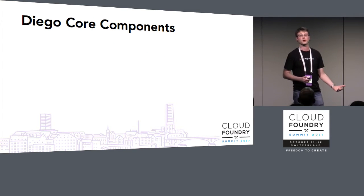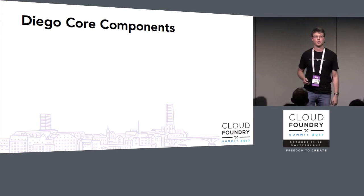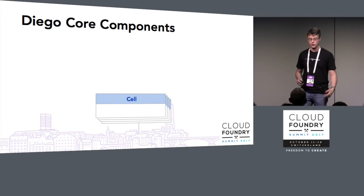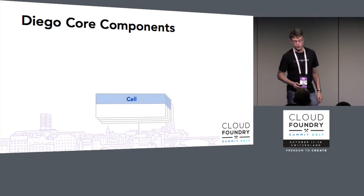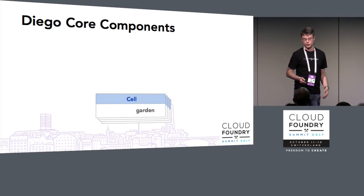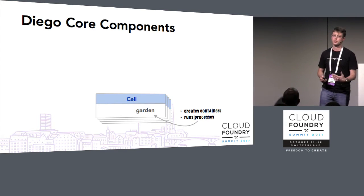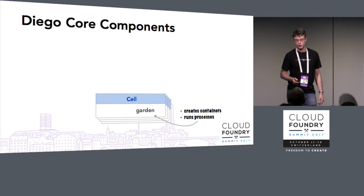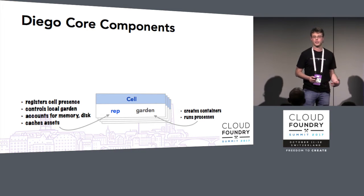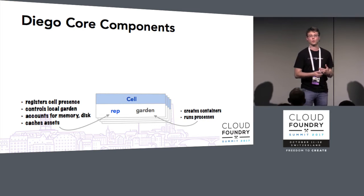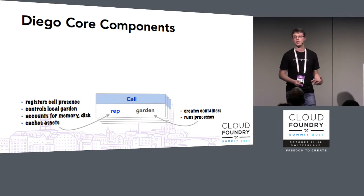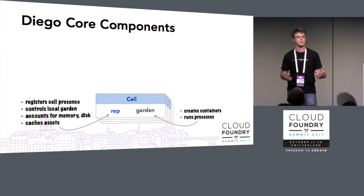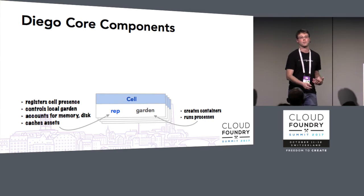The VMs or instances we call cells are the container hosts within a Diego deployment. They run a copy of Garden to create containers and run processes inside them. Co-located on those cells is one of the core Diego components we call the rep. The rep is responsible for registering the presence of that cell in the rest of the system, controlling local Garden, telling it what containers to create and destroy, tracking virtual allocations of memory and disk, and doing some asset caching as it downloads buildpacks and droplets to run inside containers.